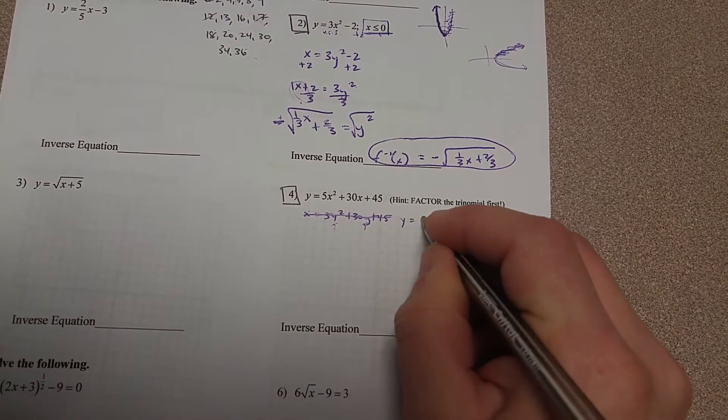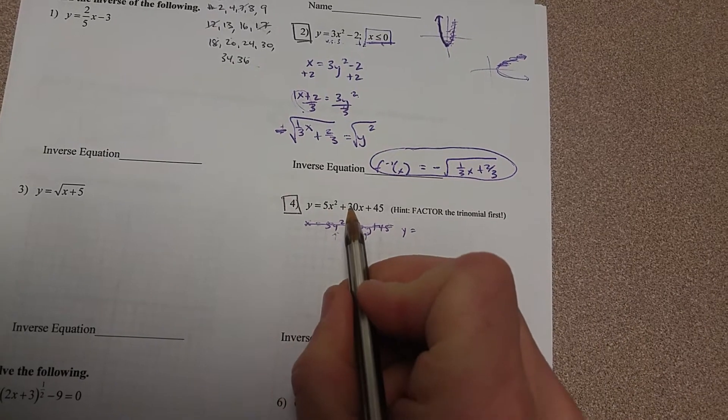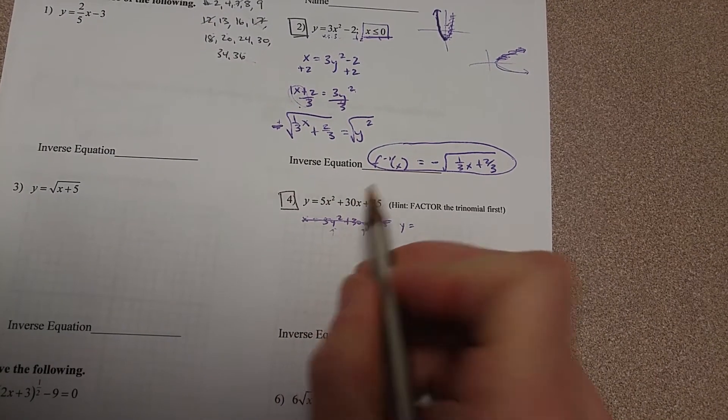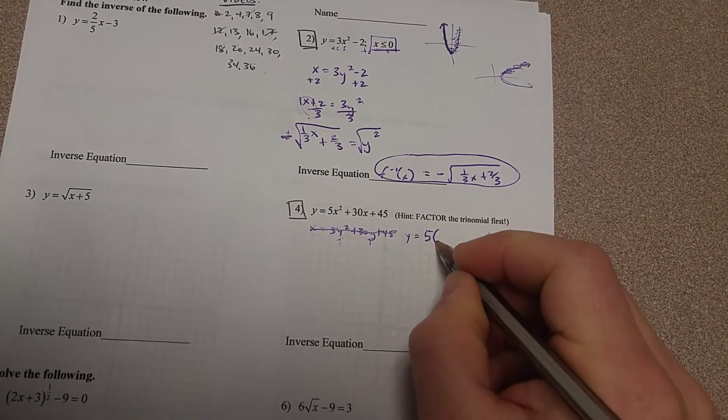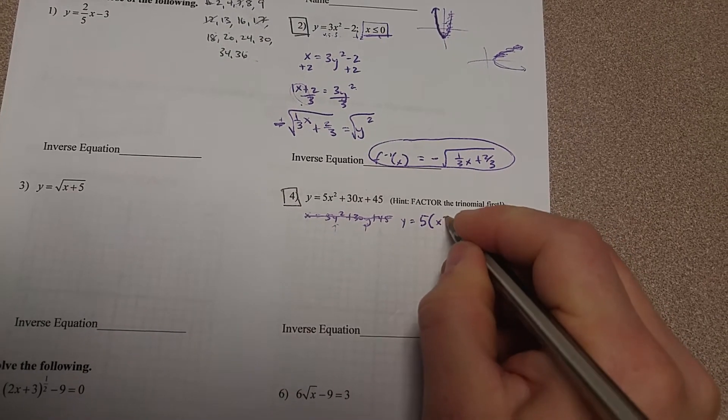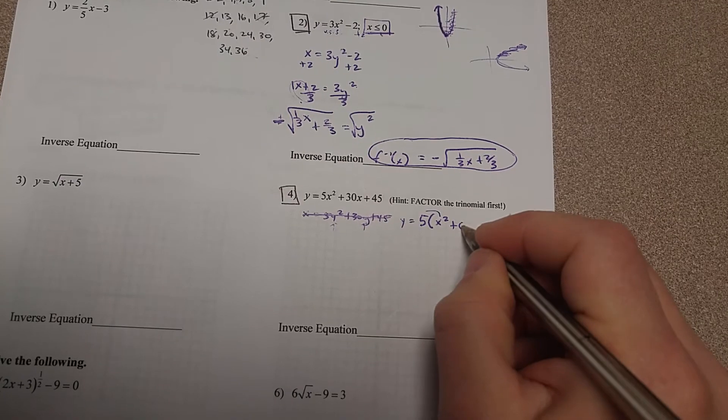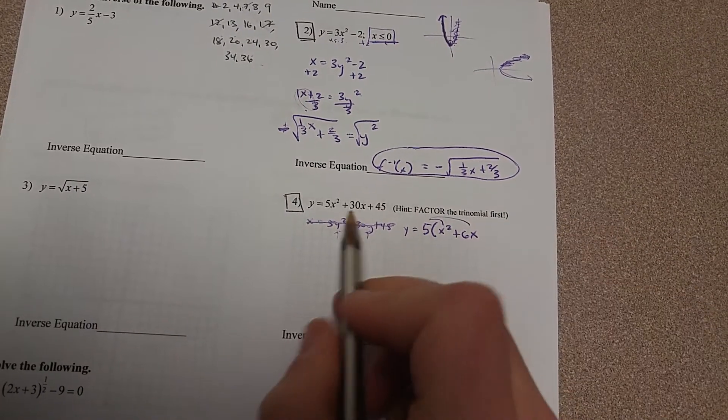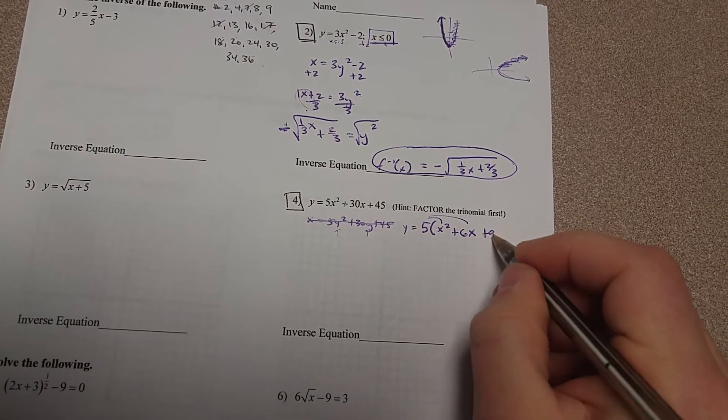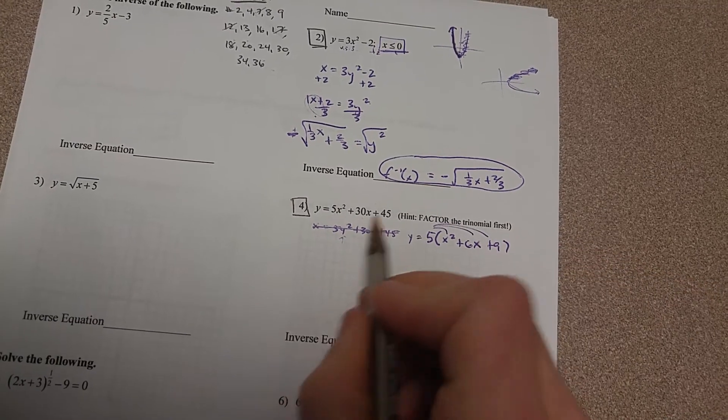So let me go back to this and let me factor. I notice that these all are divisible by 5, so I'm going to pull out a GCF of 5 first. So 5 times x squared gives me 5x squared. 5 times 6x gives me 30x, and 5 times 9 gives me 45.